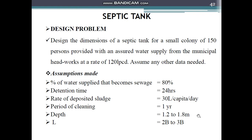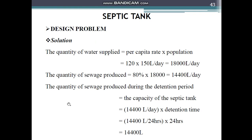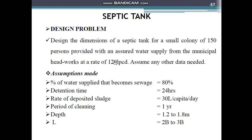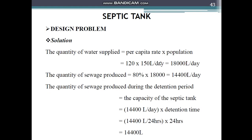Since we have total population and water supply, we'll calculate the total water supply. Water consumption given is 120 liters per capita per day, so for 150 people it is 120 × 150 = 18,000 liters per day. Since the quantity of sewage produced is 80% of water supply, 80% of 18,000 = 14,400 liters per day — this is the amount of sewage generated.